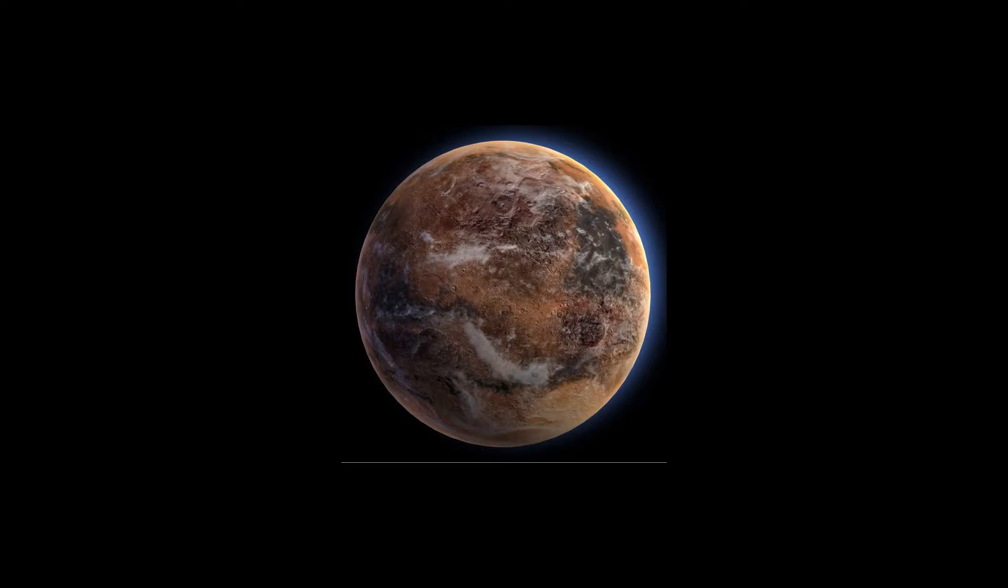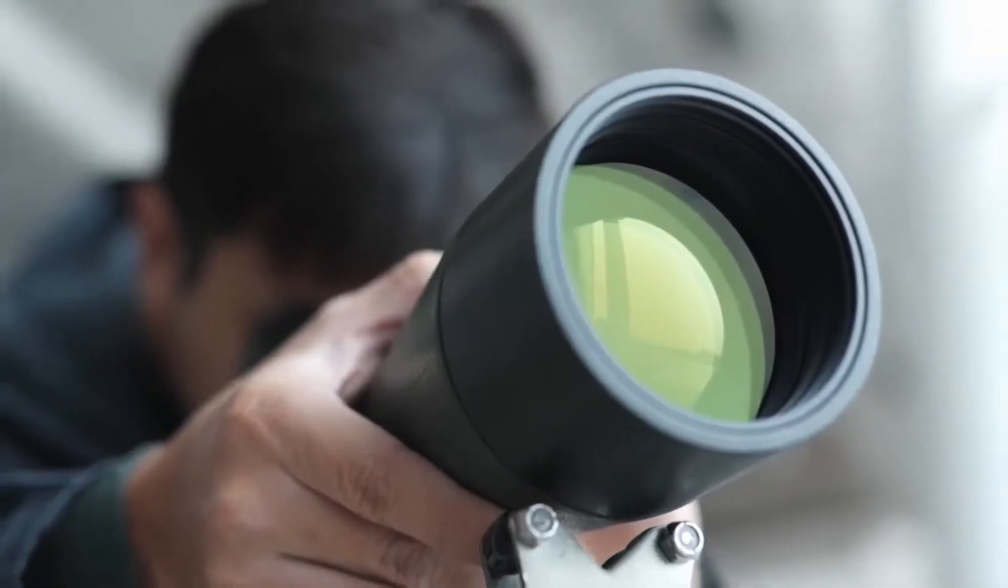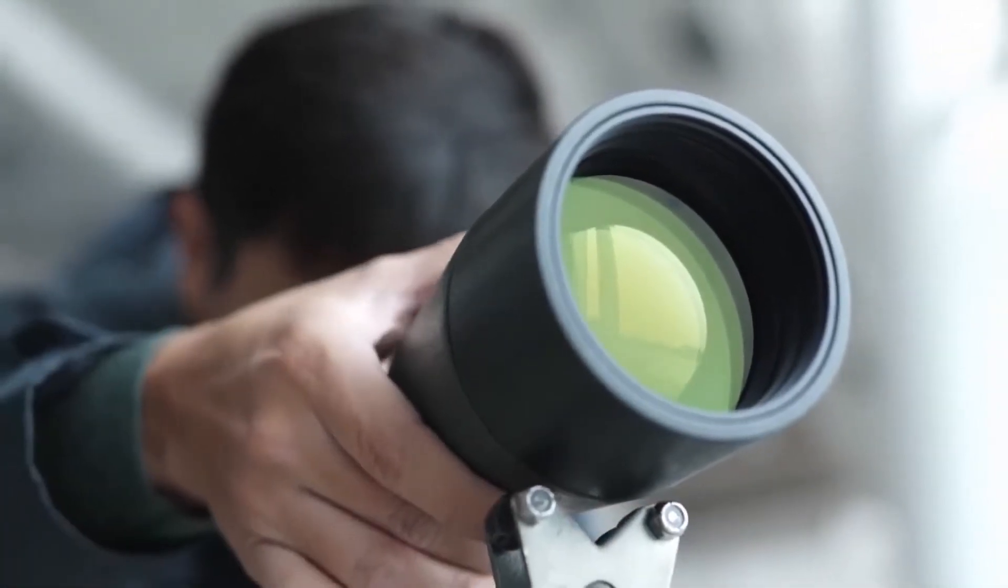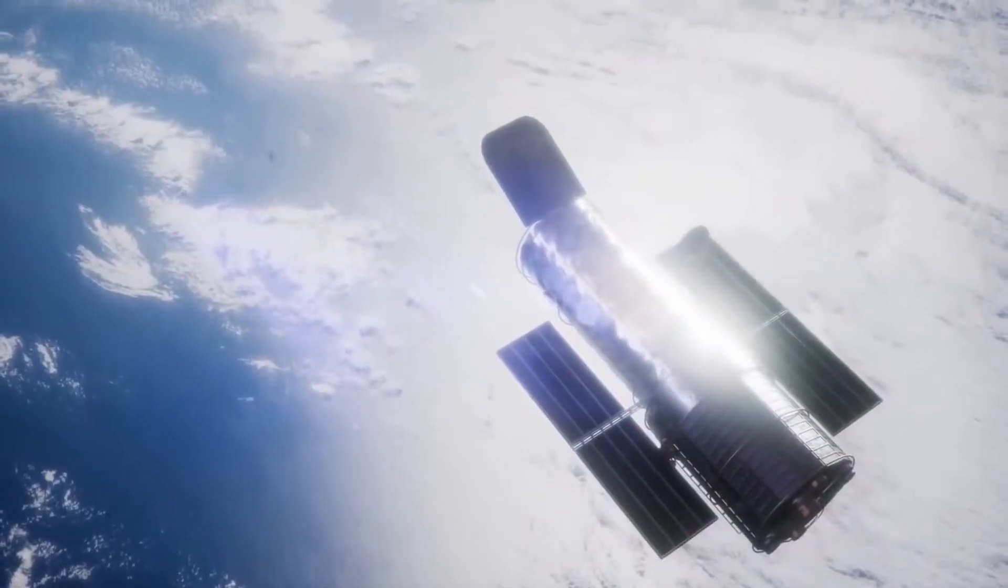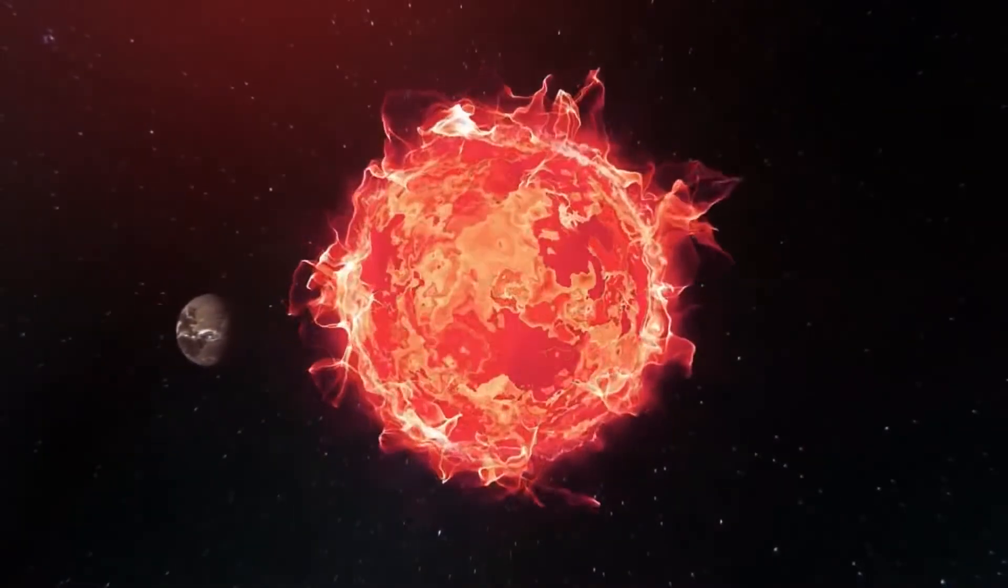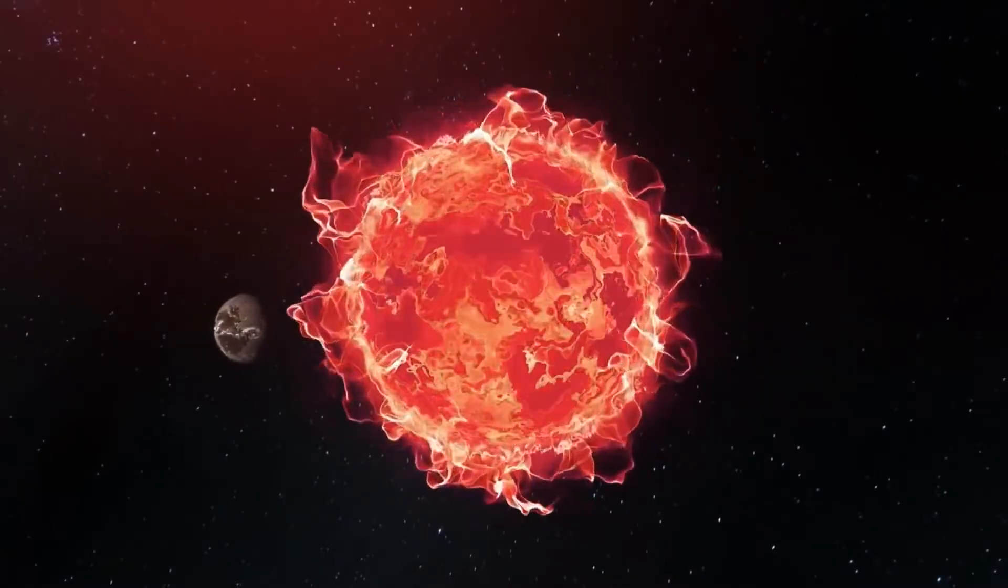Gliese 667 CC, which was found using the 3.6-meter telescope of the European Southern Observatory in Chile, may circle too closely to the red dwarf however, and could be roasted by flares.